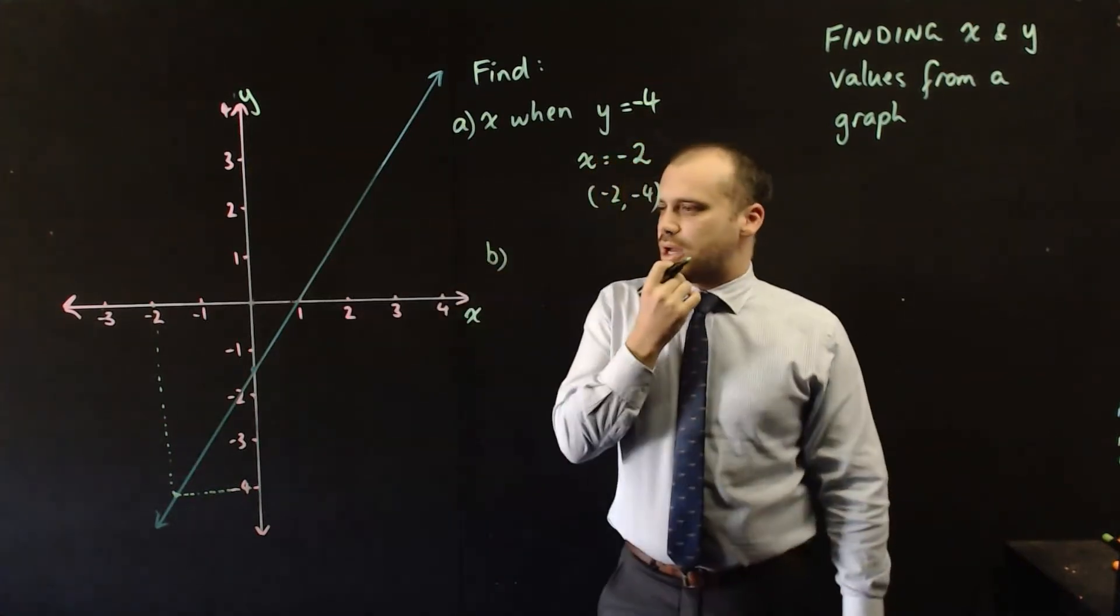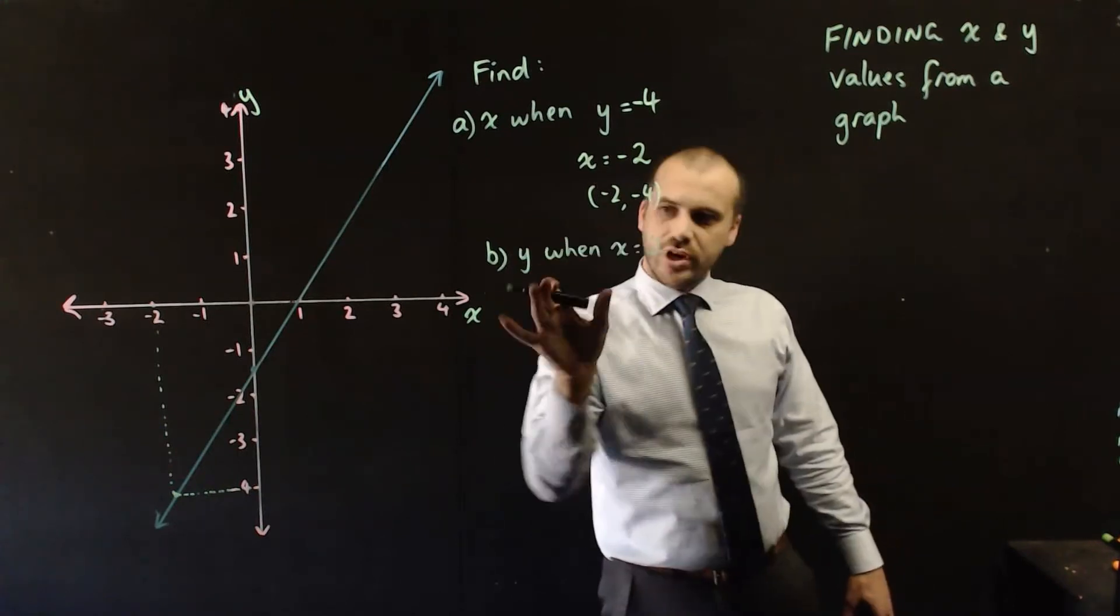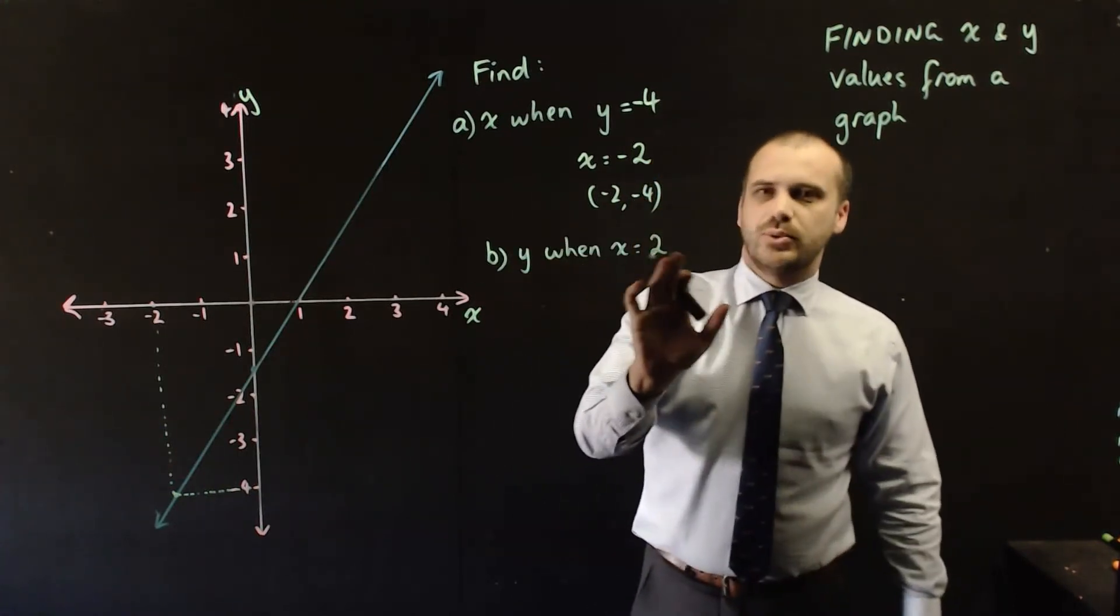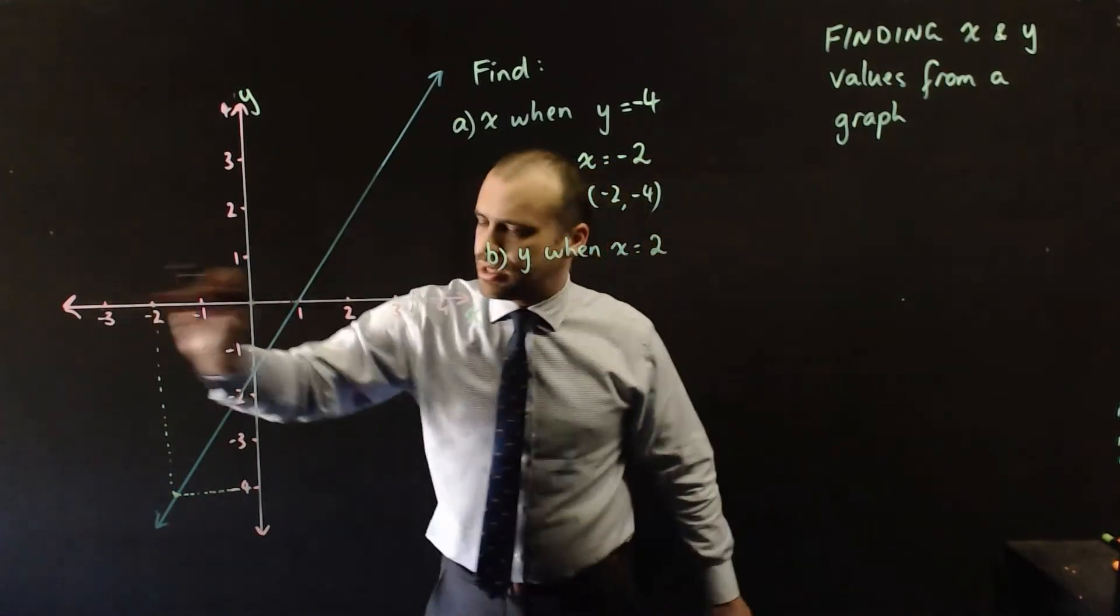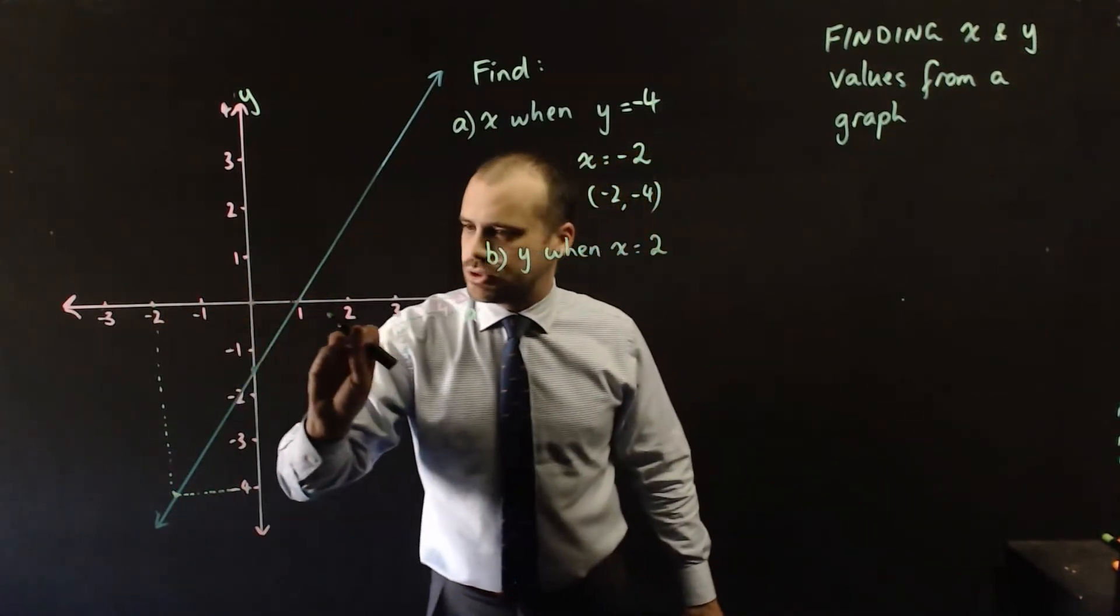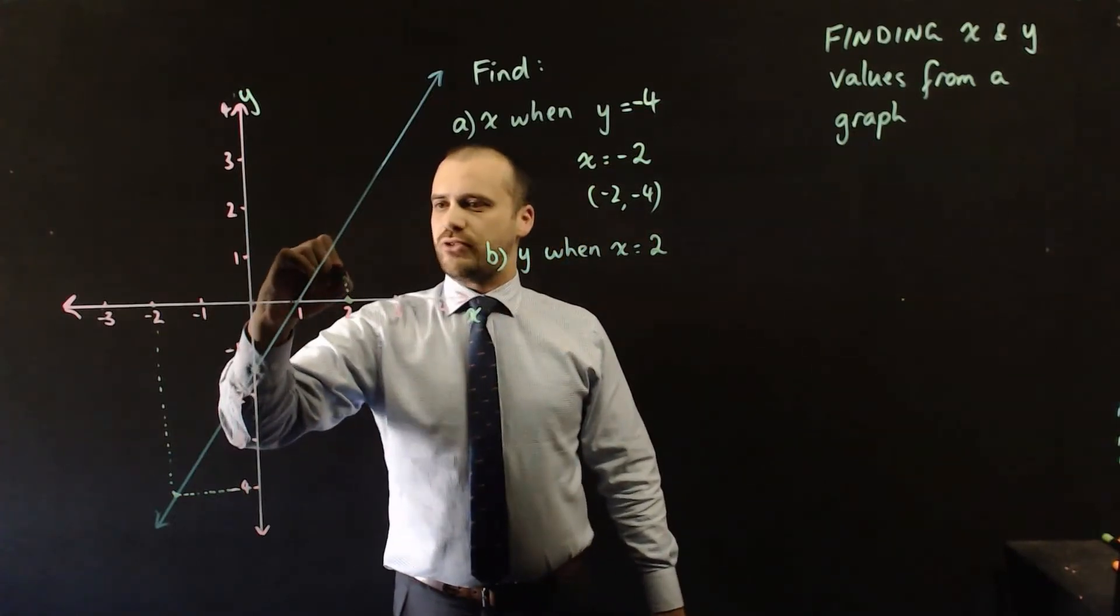We can say B, what about if we knew the x value? Let's find y when x equals 2. So this time we know what x is. So let's look along the x axis. x is equal to 2. There it is. And then we'll move straight up from there.